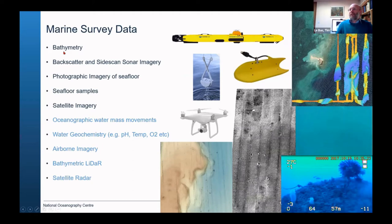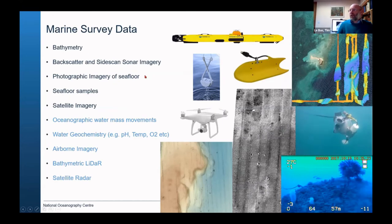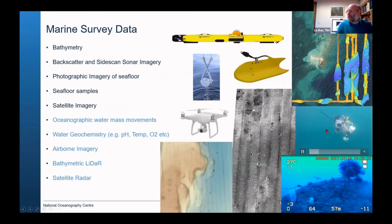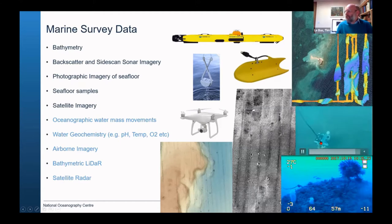Together with bathymetry, one of the main data types we play with is what we call backscatter — effectively the strength of the sonar information coming back from a multi-beam system or side-scan sonar. We have some examples of side-scan sonar here looking at the seabed. You can see little dots — these are pockmarks, little holes in the ocean where we get degassing of sediments. We then look at photographic imagery of the seafloor. This little thing here is a micro ROV diving down to the seabed.